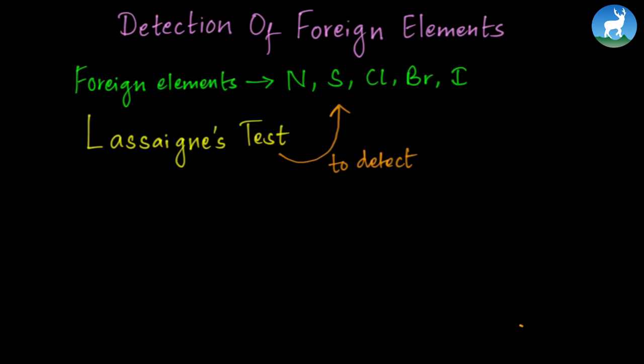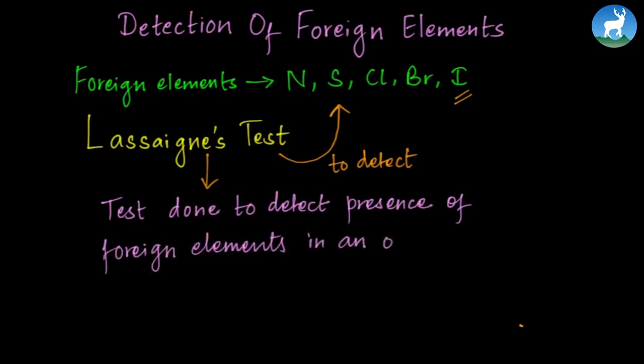and iodine. These are called foreign elements. To detect these foreign elements in an organic compound, we use Lassaigne's test. Lassaigne's test is generally a test done to detect the presence of foreign elements in an organic compound.